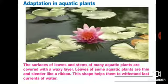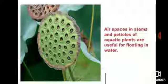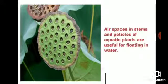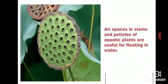The surface of leaves and stems of many aquatic plants are covered with a waxy layer. Leaves of some aquatic plants are thin and slender like a ribbon. This shape helps them to withstand the fast current of water. Air spaces in stems and petals of aquatic plants are useful for floating in water.